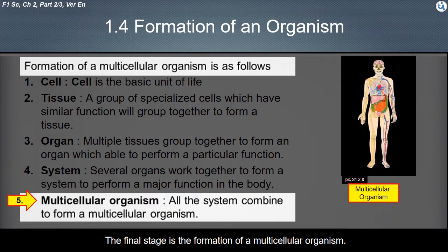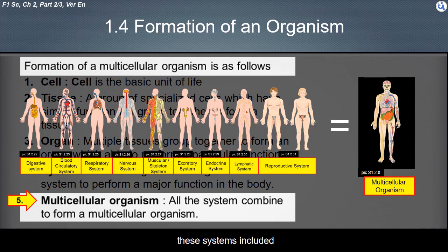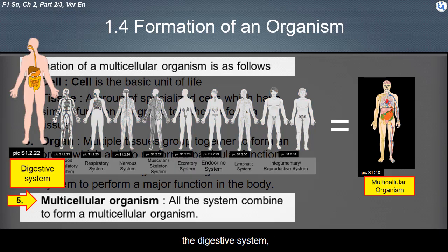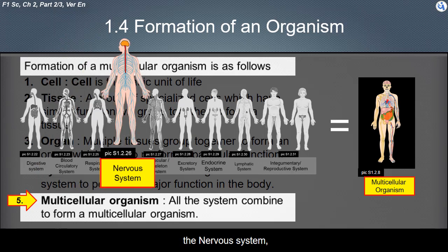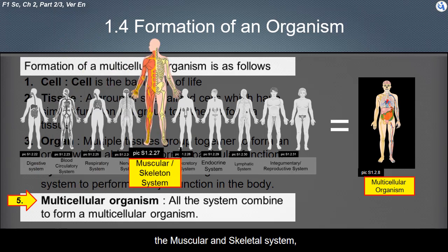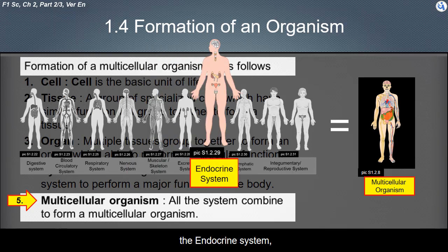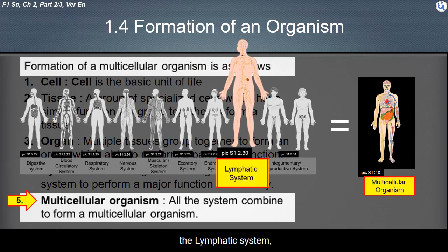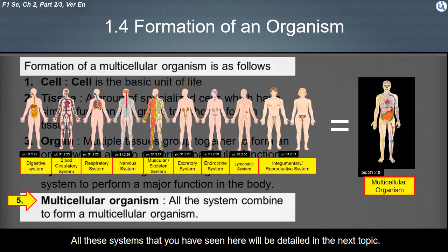The final stage is the formation of a multicellular organism, where all systems combine together to form a multicellular organism. These systems include the digestive system, the blood circulatory system, the respiratory system, the nervous system, the muscular and skeletal system, the excretory system, the endocrine system, the lymphatic system, the integumentary and reproductive system. All these systems will be detailed in the next topic.